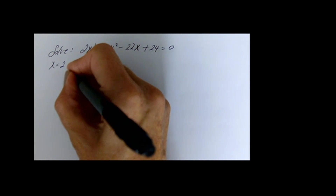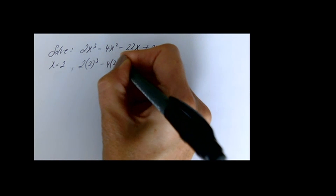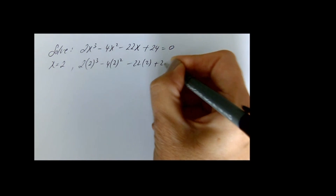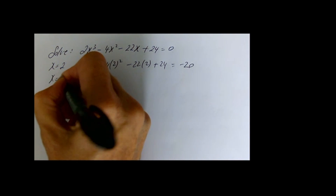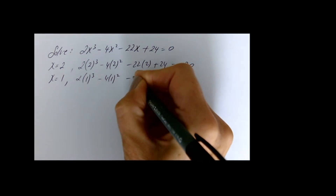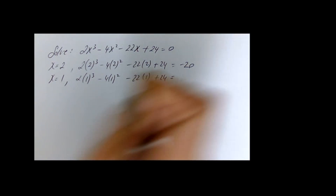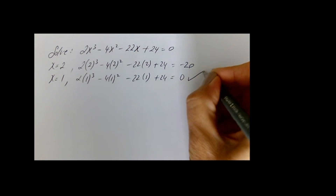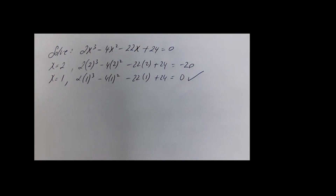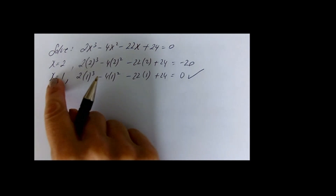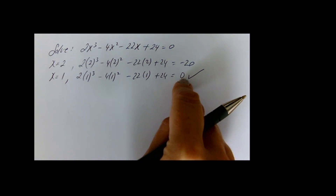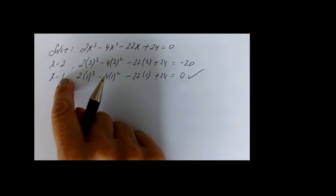By trial and error: trying x equals 2 gives minus 20, so that doesn't work. Trying x equals 1 gives zero, so we've hit on a solution. In practice it's easiest to start with 1, but I wanted to show that it's just a matter of trying values — you could also try minus 1, minus 2 — you won't have to go too far.